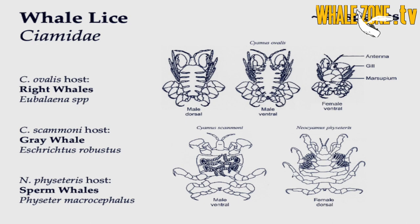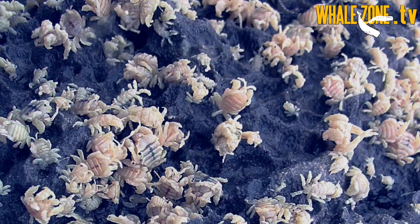Another form of parasite is the cyamid amphipod, which is a crustacean, commonly known as whale lice. These whale lice are particularly found in large cetaceans, such as the humpback whale, the gray whale, and the southern right whales. There are anatomical and physiological explanations for the occurrence of whale lice on the surface of cetaceans.